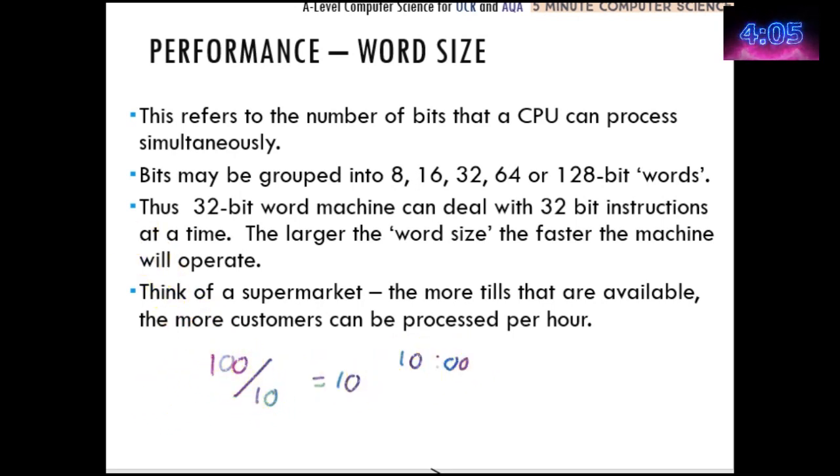However, what would happen if we didn't have 10 tills and we actually had less than that? So let's say we had 2 tills. 100 divided by 2 would mean we've got 50 customers, and 50 customers at one minute per customer would mean it takes us 50 minutes to process all those customers. So that's significantly more than if we had 10.